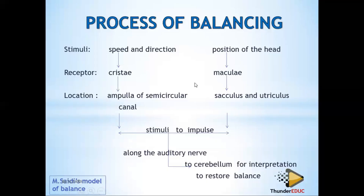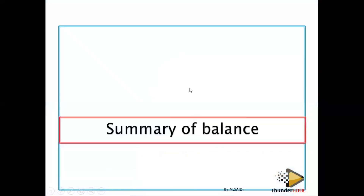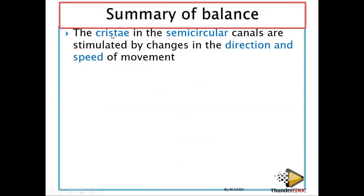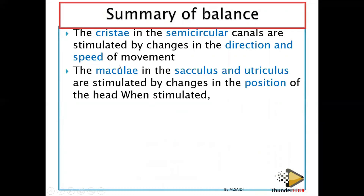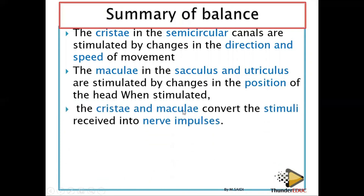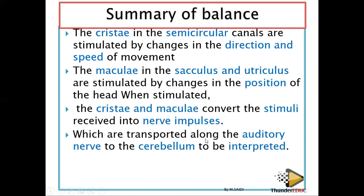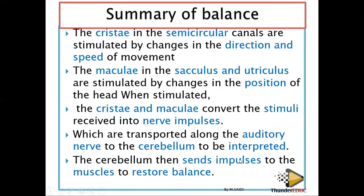There's no way they'll ask questions outside the scope. Summary of balance: the cristae in the semicircular canals are stimulated by change in speed and direction of movement. The maculae in the saccular and utriculars are stimulated by change in the position of the head. When stimulated, the cristae and maculae convert the stimuli into nerve impulses, which are transported along the auditory nerve to the cerebrum for interpretation, so that the cerebrum sends impulses to muscles to restore balance.